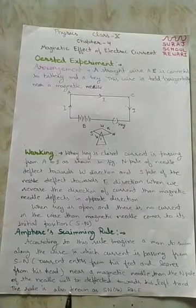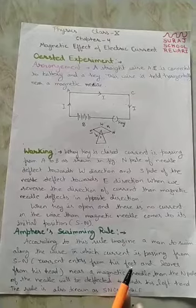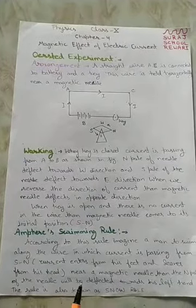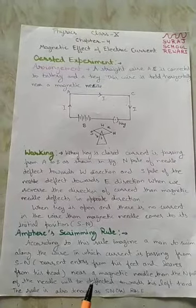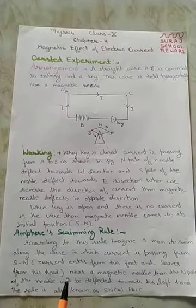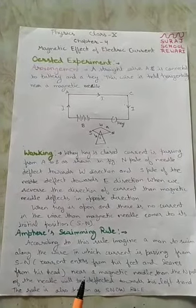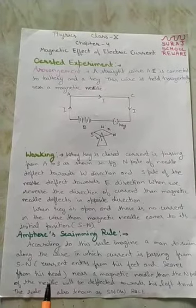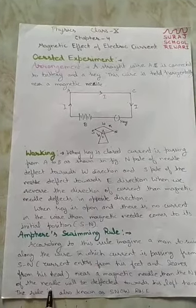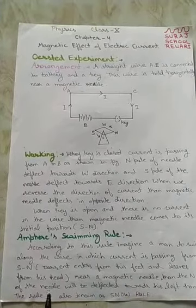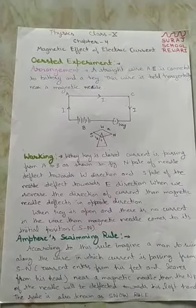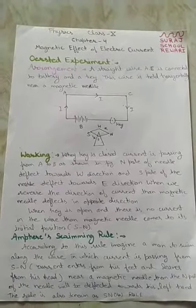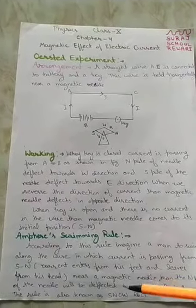We place a magnetic needle below him. We see that the north pole of the magnetic needle deflects towards the left hand of the person, meaning towards the west direction, and the south pole of the magnetic needle deflects towards his right hand, meaning towards the east direction.